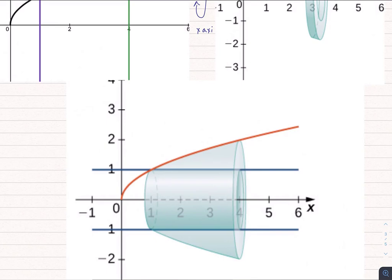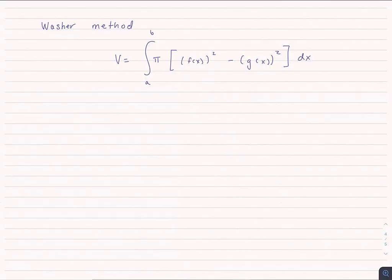From here, it's a very simple step. The volume of this shape is simply going to be the integral from a to b of pi times the difference between the two radii squared. That is f of x squared minus g of x squared, all in terms of dx.